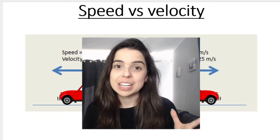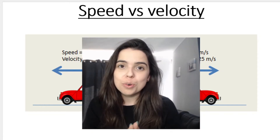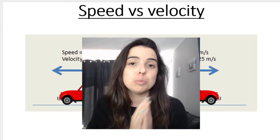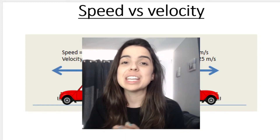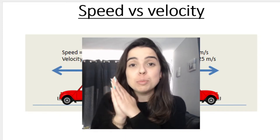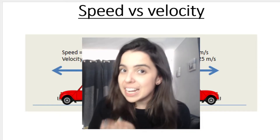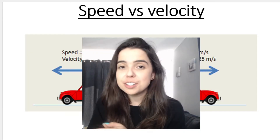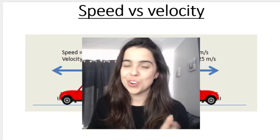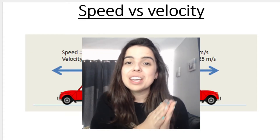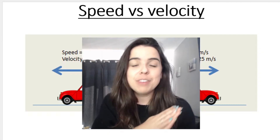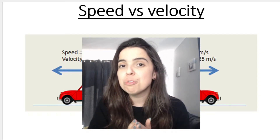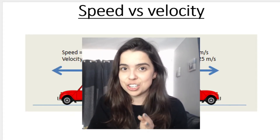Speed versus velocity. First of all, the very big and most important difference between speed and velocity is the fact that speed is what we call a scalar quantity, which means that it only has a magnitude, no direction. Velocity, on the other hand, is a vector quantity, which means it has both a magnitude and a direction.